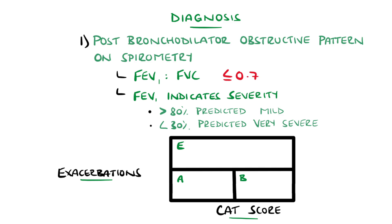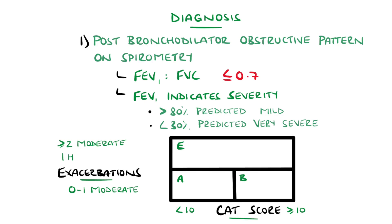Based on these two features, patients are divided into GOLD group A, B, or E. Group A reflects low symptom burden, so a CAT score less than 10, and one or fewer moderate exacerbations per year. Group B is for increased symptom burden, with CAT scores of 10 or above, but still less than one exacerbation per year. And group E if there are two or more exacerbations per year — we'll see how this impacts treatment shortly.